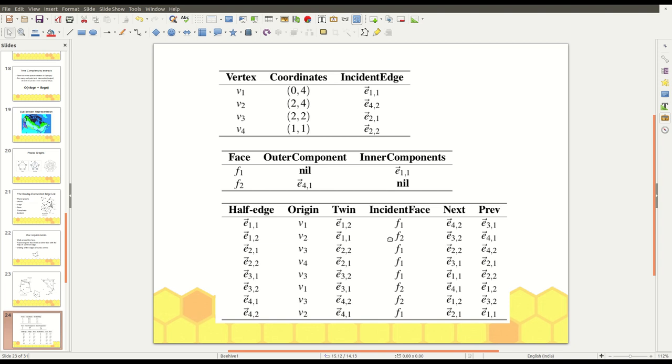So, in this way, we are going to represent vertex and face. And now, coming to the main part, doubly connected edge list. This is a doubly connected edge list. We have next and previous. So, we can call it as doubly connected. Apart from this, we have stored three more attributes: origin, twin and incident face.